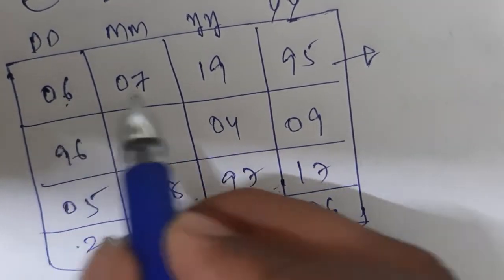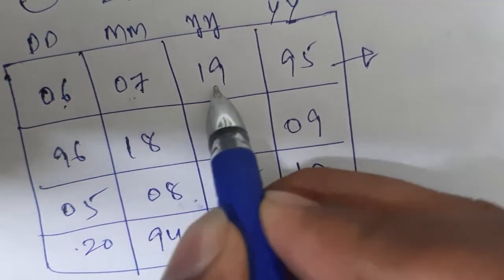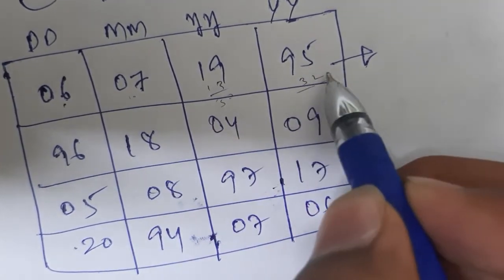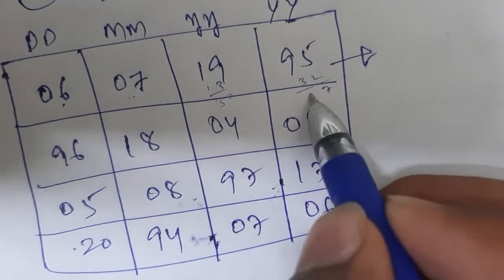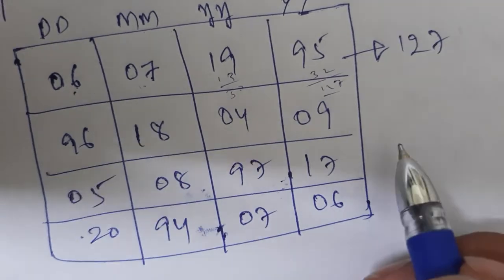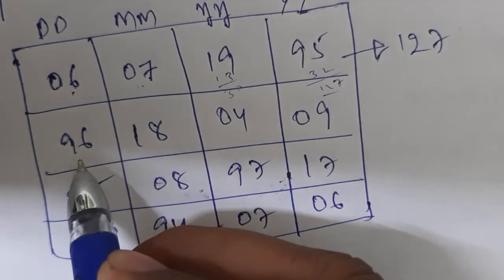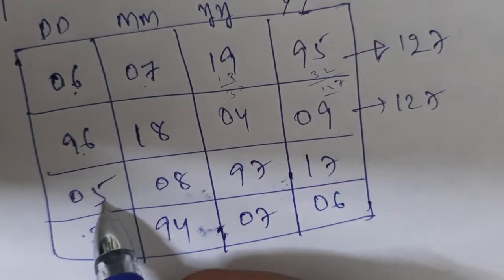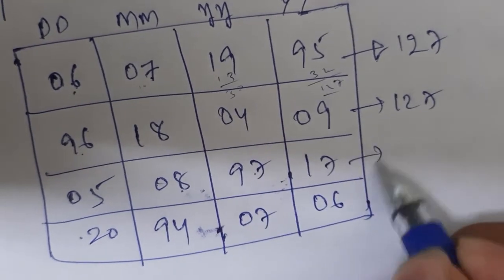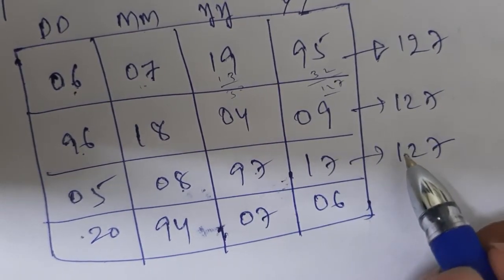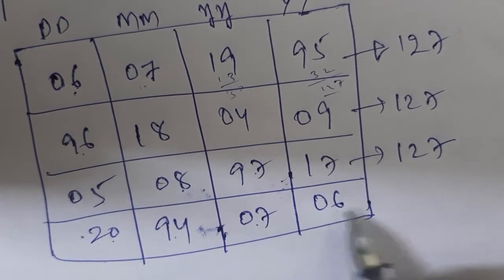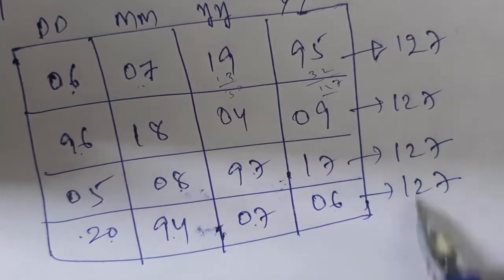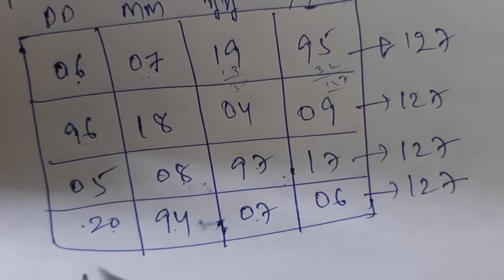Now let us check the sum of all rows. The first row: 6 plus 7 is 13, plus 9 is 22, plus some values gives 127. The second row: 96 plus 18 plus 4 plus 9 equals 127. The third row: 5 plus 8 plus 97 plus 17 equals 127. And the fourth row: 20 plus 94 plus 7 plus 6 also equals 127. So all row sums are the same.